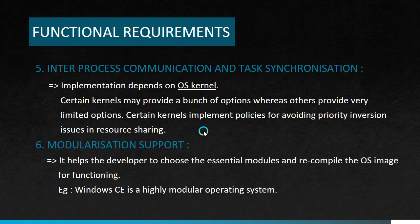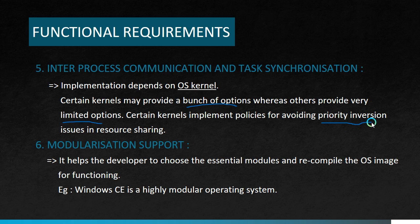Next we move on to the fifth requirement: inter-process communication and task synchronization. The implementation depends on the OS kernel. Certain kernels may provide a bunch of options while others give only limited options. Certain kernels implement policies for avoiding priority inversion issues in resource sharing — where a higher-priority task is delayed while a lower-priority task is resolved. The inter-process communication and task synchronization of task scheduling all depend upon the OS kernel, so the kernel implementation is mandatory to analyze when evaluating an RTOS.